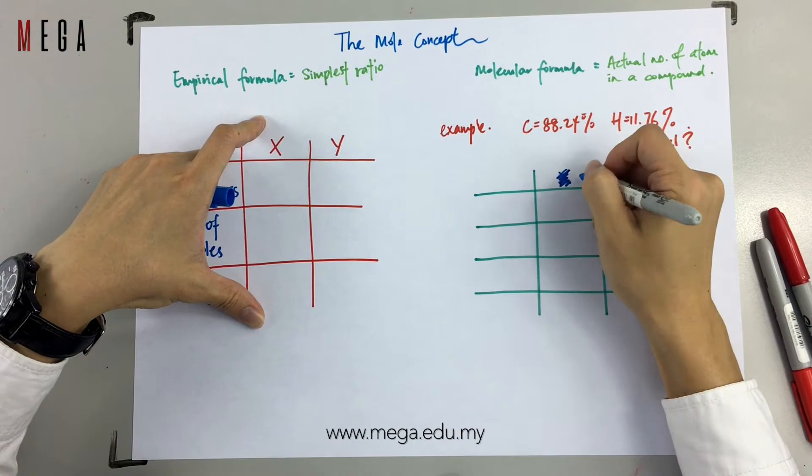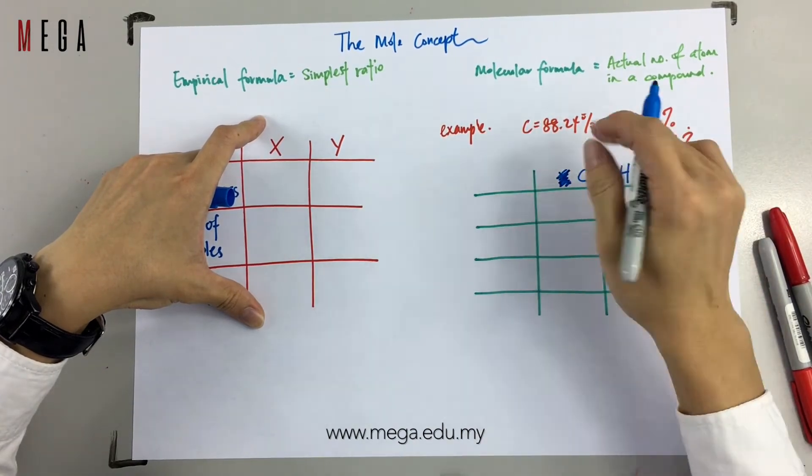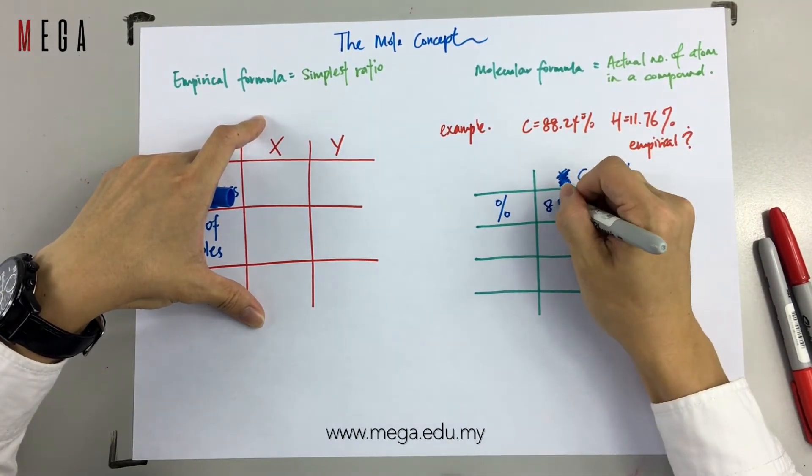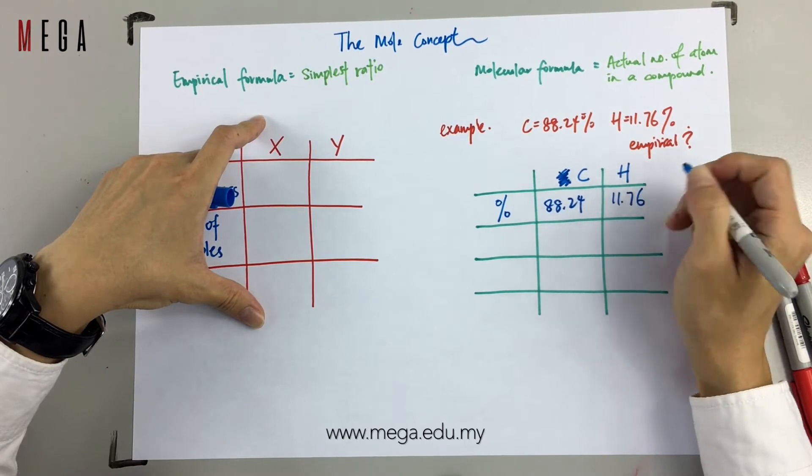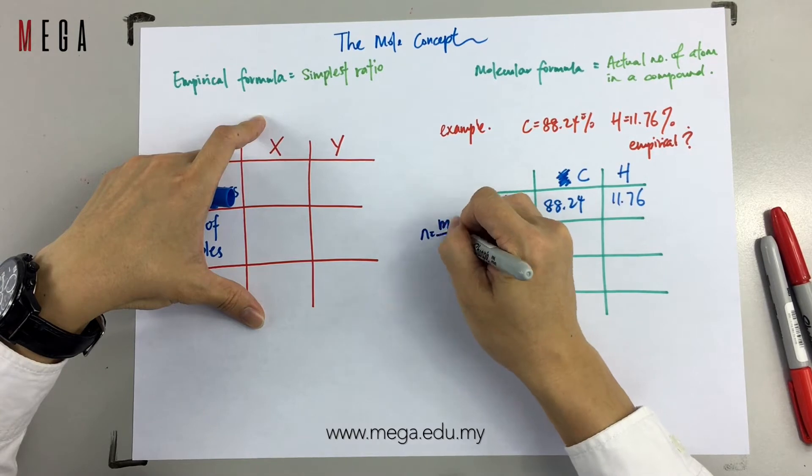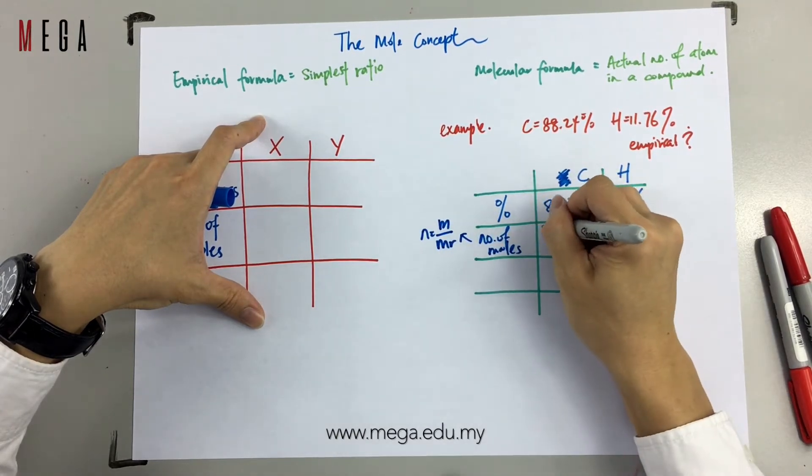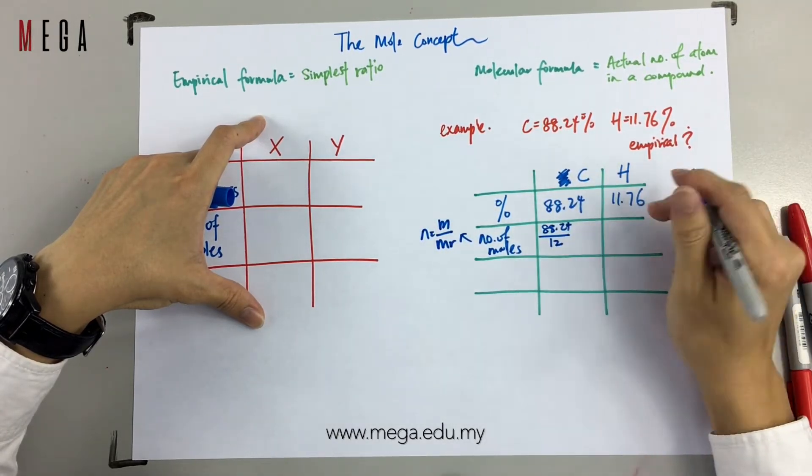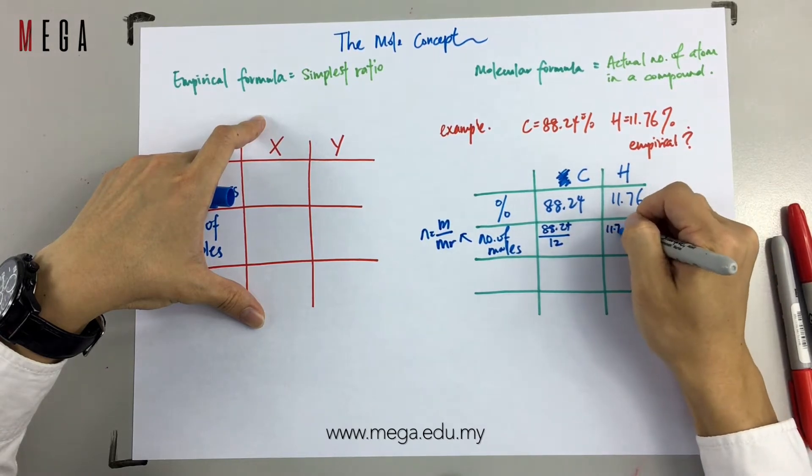Look for the percentage of the elements given: C is 88.24%, H is 11.76%. Next, look for the number of moles. Remember, the formula is N equals to M over Mr. So, C: 88.24 divided by 12, H: 11.76 divided by 1.